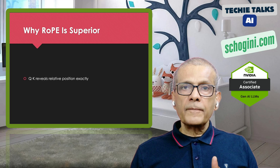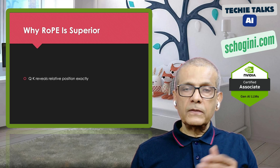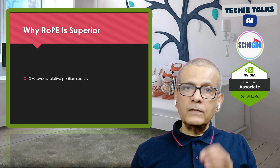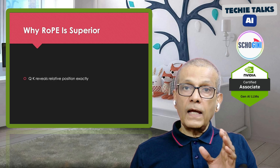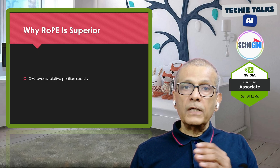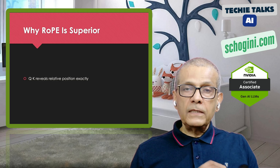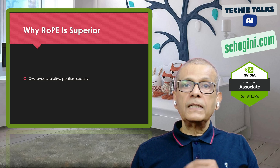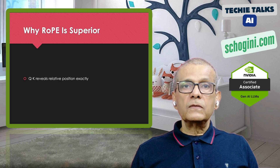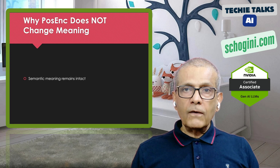Why is ROPE superior? The query-key vector — which we will see in subsequent videos — reveals relative position exactly. The angles encode distance directly, making it perfect for long contexts. ROPE makes relative order mathematically precise by directly encoding distance in the rotation angle.